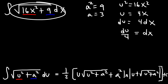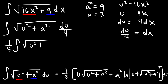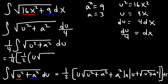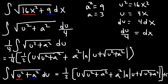Convert the expression: replace 16x squared with u squared, 9 with a squared, and dx with du over 4. Moving the one fourth to the front gives one fourth times the integral of the square root of u squared plus a squared du. Applying the formula yields one fourth times one half times u times the square root of u squared plus a squared plus a squared times ln of u plus the square root of u squared plus a squared, plus C.